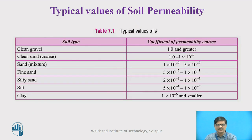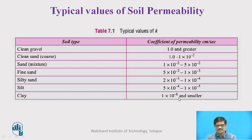These are certain typical values of soil permeability. From gravel up to clay we have a variety of soils, and the range of the coefficient of permeability is given. The maximum permeability is in case of clean gravel. In case of clay, the permeability is very very less — it is as good as impermeable soil, where the coefficient of permeability is 1×10⁻⁶ cm per second and even smaller.